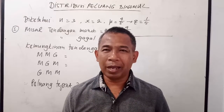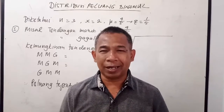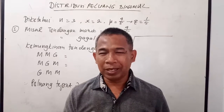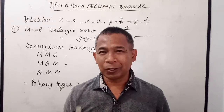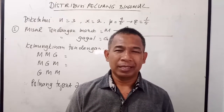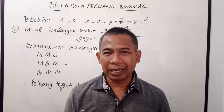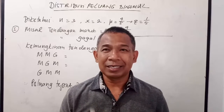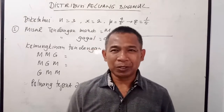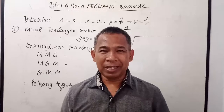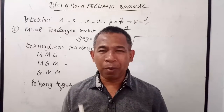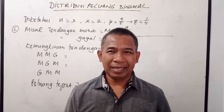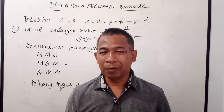Yaitu sukses atau gagal, sehingga dikatakan binomial. Kita tahu bahwa jumlah dari setiap percobaan dalam sebuah distribusi itu berjumlah satu. Sehingga apabila peluang suatu percobaan yang sukses kita sebut P, sedangkan peluang yang gagal kita sebut Q, maka P ditambah Q harus sama dengan satu. Kemudian, peluang dari setiap percobaannya itu selalu tetap, tidak akan berubah-ubah.